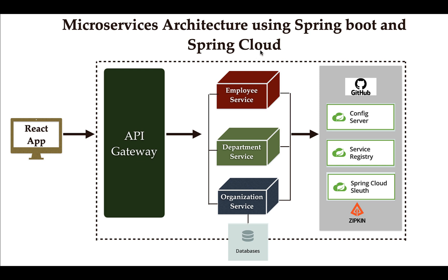You will learn how to use Spring Cloud tools and patterns to solve different kinds of issues in a microservices project. For example, you will learn how to use Spring Cloud Config Server to externalize configuration files of all microservices to a central repository like Git, and how to use the Spring Cloud Eureka Server to implement service registration and discovery. You will also learn how to use Spring Cloud Sleuth to implement distributed tracing.